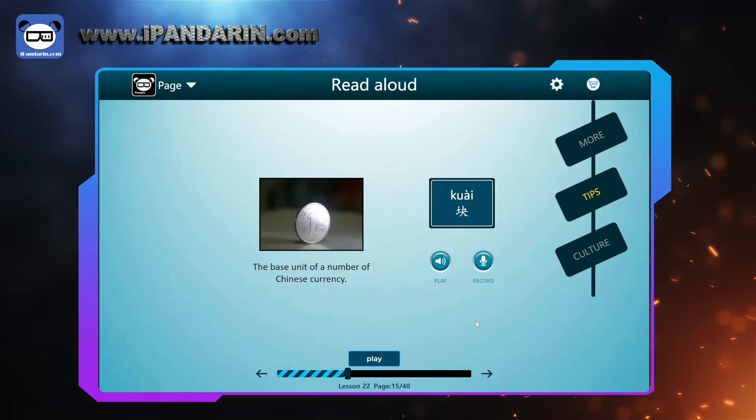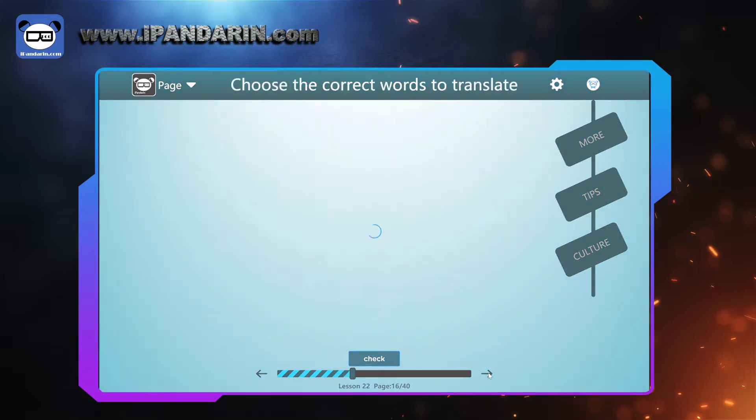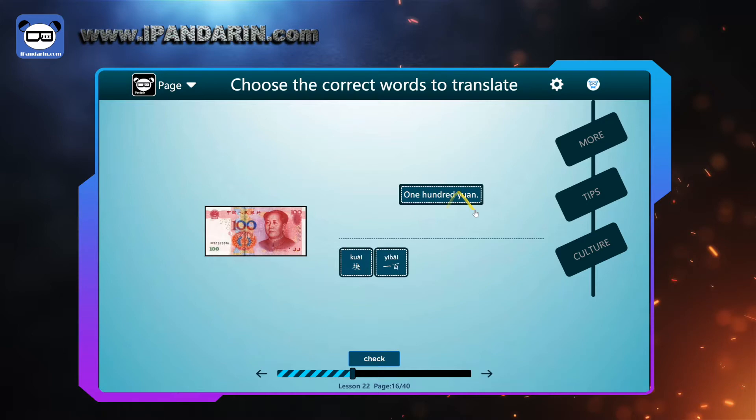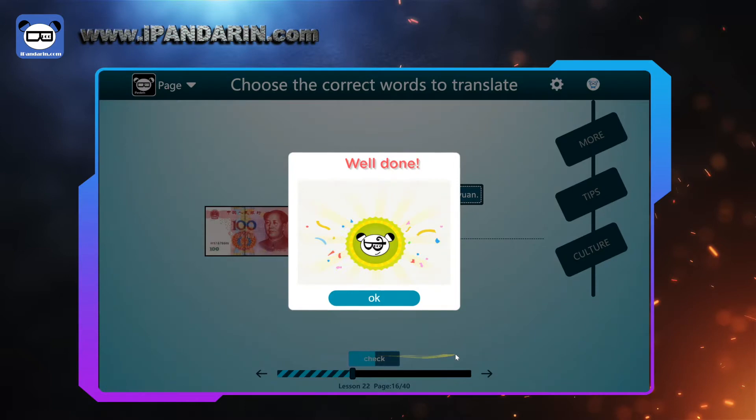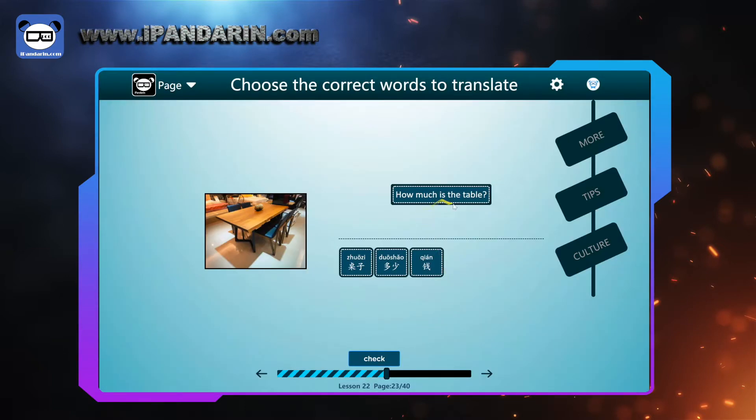To state the money, the price, we need the unit, the basic unit of Chinese currency, kuai. Speak after me. 块, 一块, 一元. 块 and 元. One hundred yuan, we'll say 一百块. Put the number before the unit, 一百块. How much is the table? We put the thing to subject, the table. 桌子, with 多少钱? 桌子多少钱?